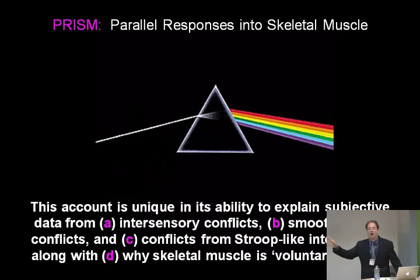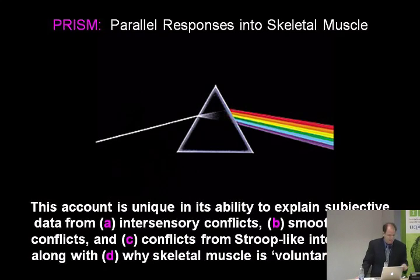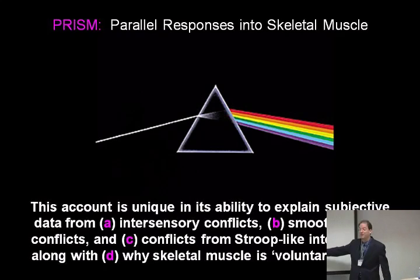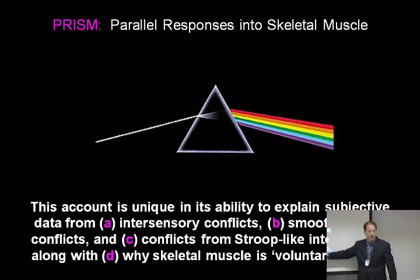This explains when a conflict or integration in the nervous system will perturb consciousness or not. The account is unique because it explains why intersensory conflicts are unconscious, why smooth muscle conflicts are unconscious, and why you are conscious of the Stroop effect conflict. You see the word red written in blue, you have to say blue — you feel the conflict. Holding your breath, you're conscious. And it explains why skeletal muscle is voluntary muscle — because it's an effector guided by systems that use the bizarre states we call consciousness as a method of integration and communication.